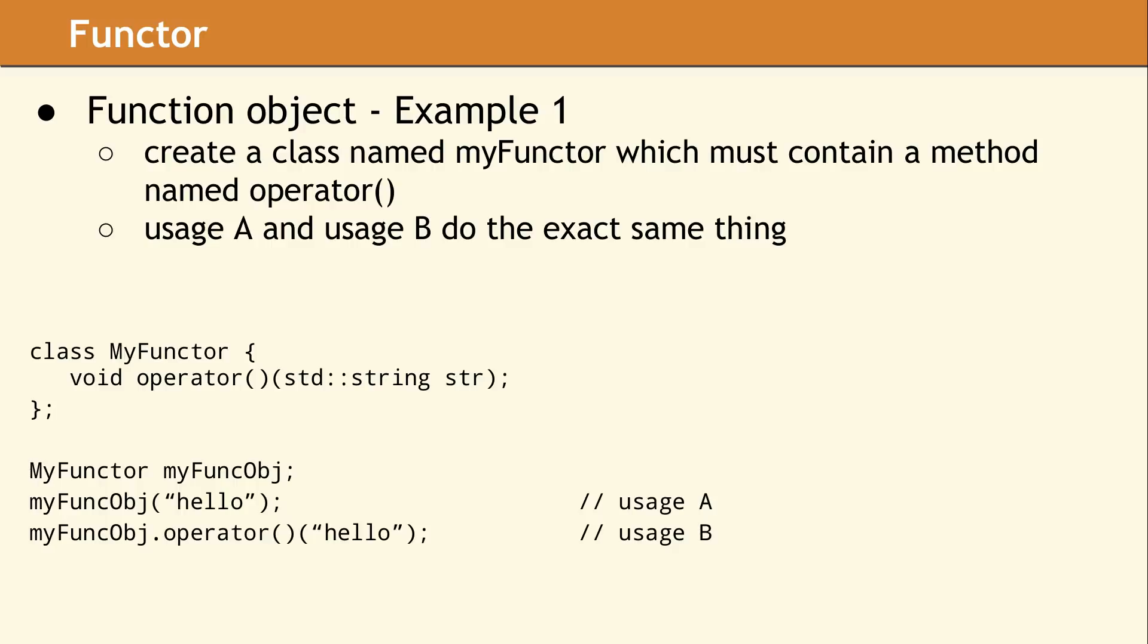This is a very basic example, which declares a function object type. MyFunctor is a class, and it defines a function call operator. We are not showing any data members in this class, although normally you would have data members. Note the first set of parens in the operator declaration. This is part of the method name. The second set of parens contains the actual parameter declarations. This syntax does look a bit odd, but all the parentheses are required. Once we instantiate this data type to create a function object, then we can call the function object as if it were a function. The call is shown on usage A. You can also explicitly call the function operator method as shown for usage B, although there's seldom any reason to use this particular syntax.